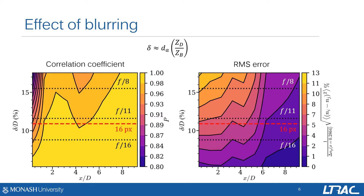Firstly, the effect of defocus blurring. Spatial averaging is introduced to the TBOS measurement through defocus blurring in BOS, where the background is placed further away than the flow in order to increase the measurement sensitivity. The blur is a function of the camera aperture. We express the blurring as a function of the nozzle diameter and the corresponding apertures for the downstream positions. The correlation coefficient and RMS error between the blurred and the original fields are used to gauge the impact of blurring.